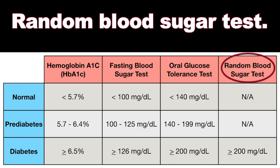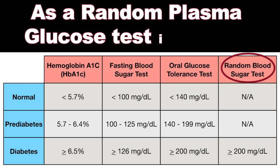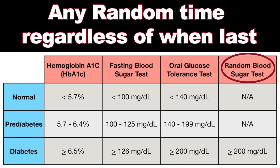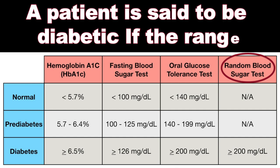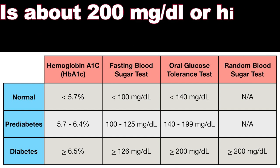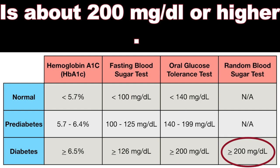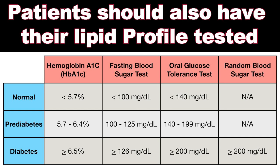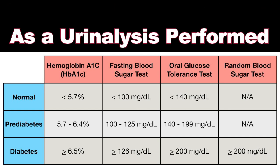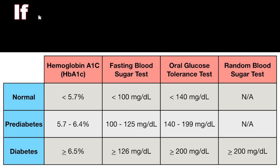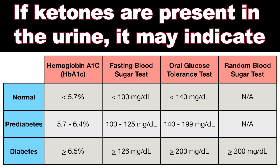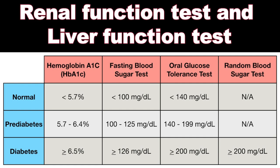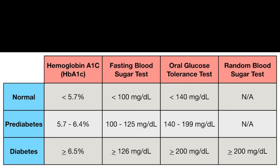A random blood glucose test, also known as a random plasma glucose test, checks blood sugar at any random time regardless of when the last meal was taken. A patient is considered diabetic if the result is 200 mg/dL or higher. On investigation of type 2 diabetes, patients should also have their lipid profile tested and a urinalysis performed to check for proteinuria. If ketones are present in the urine, it may indicate type 1 diabetes. Renal function and liver function tests are also recommended.